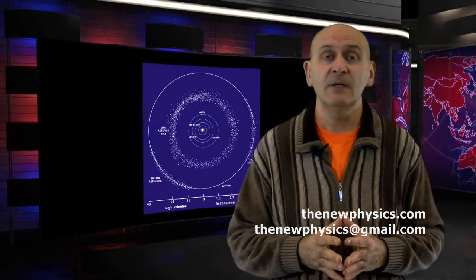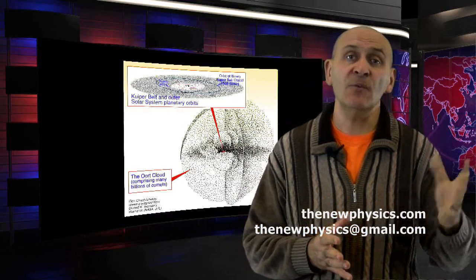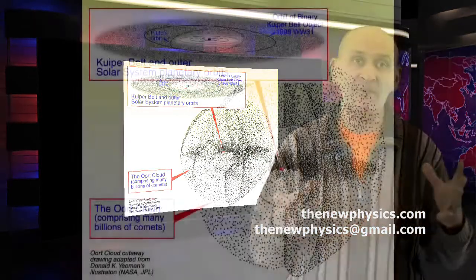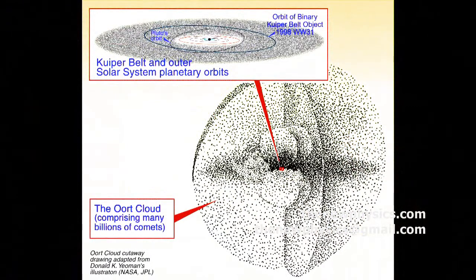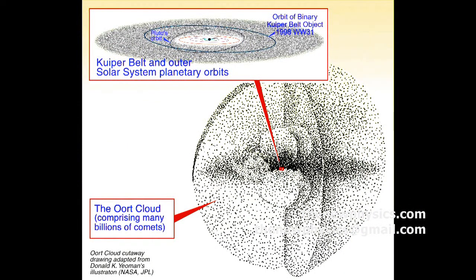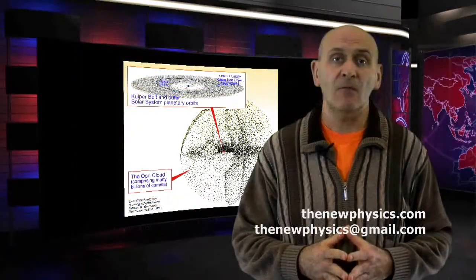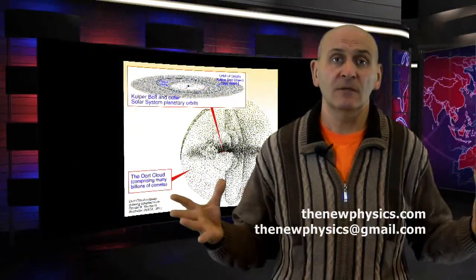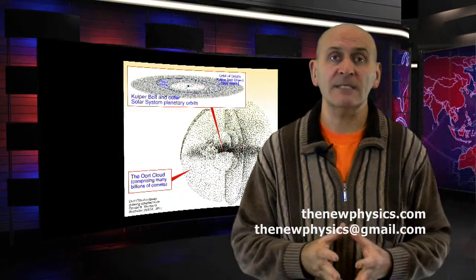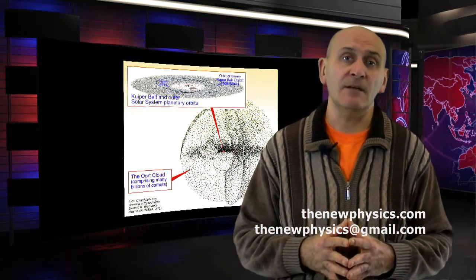donut shape, which we named Kuiper belt. And even it is huge, it's immensely small comparing to the Oort cloud, which is really, really huge and covering all the solar system in one sphere of asteroids.